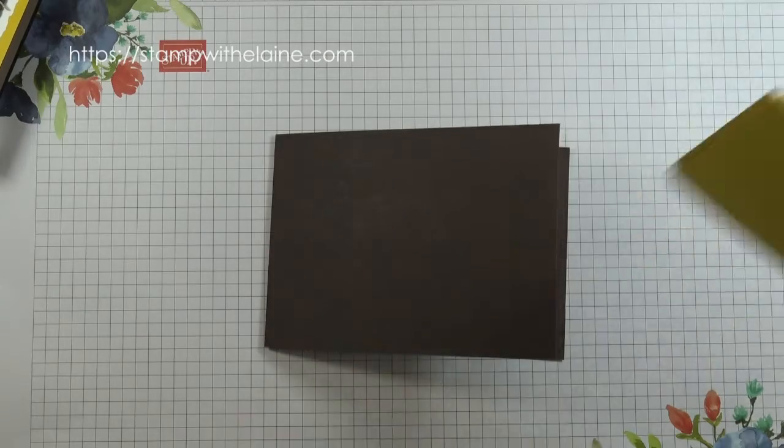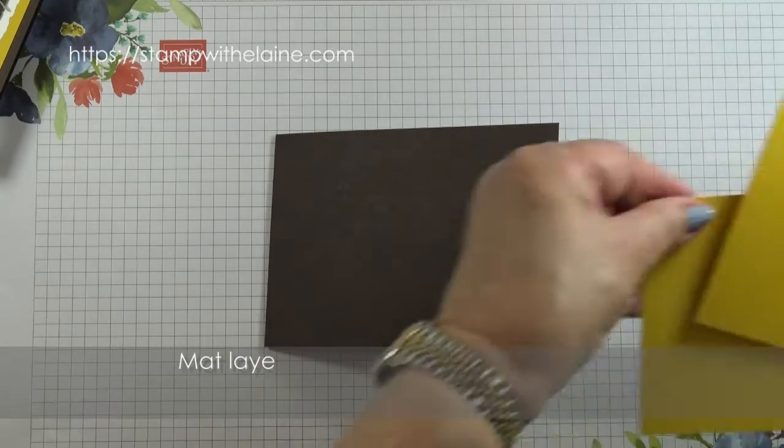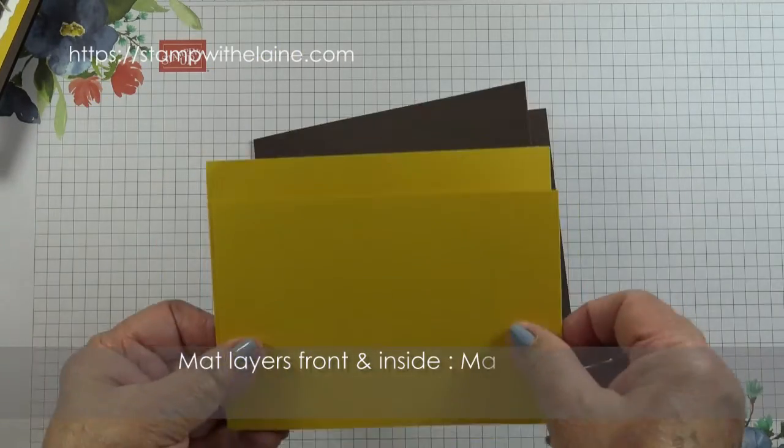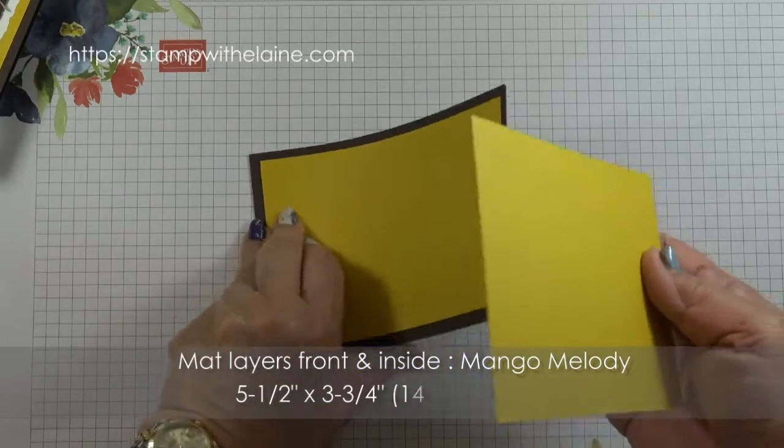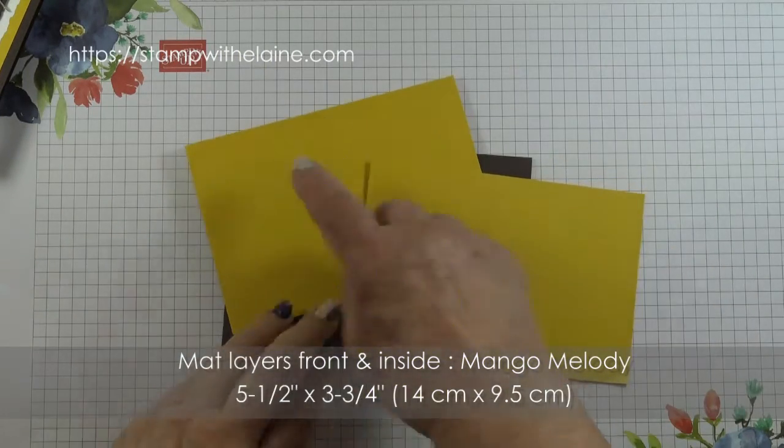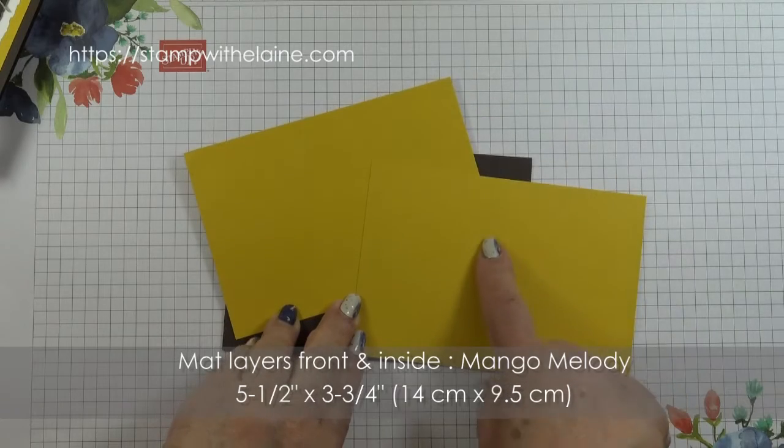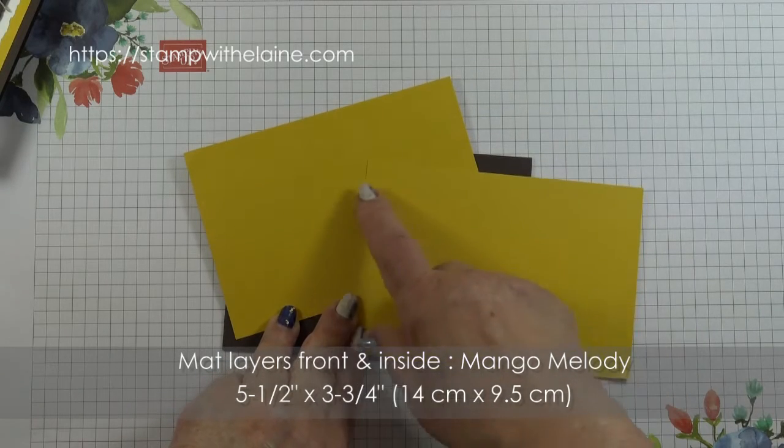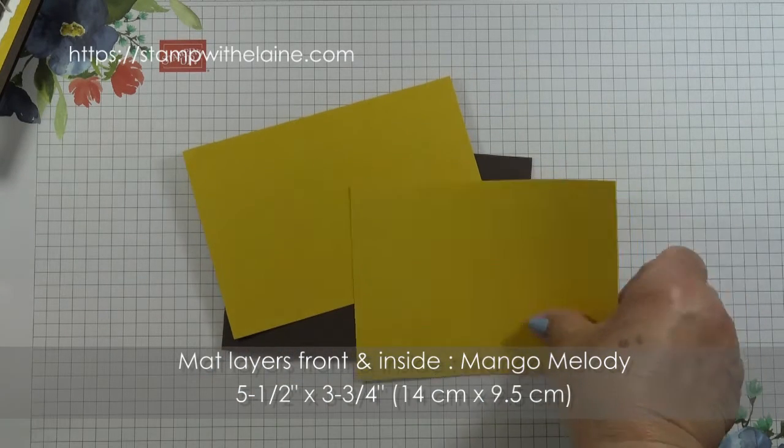Then for your mat layers you have two in mango melody and one is for the front of the card and one for the inside. These measure five and a half by three and three quarters so in metric that's fourteen centimeters by nine point five centimeters.